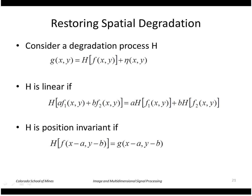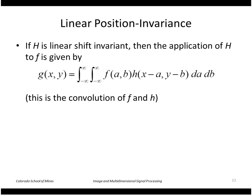We'll also look at position-invariant degradation: if we shift the image by a displacement A and B, that also shifts the result by that same amount. So the degradation acts the same way no matter where we are in the image — blurring in cameras is typically like that. This is then a convolution, expressed mathematically by taking our input image, multiplying by the degradation function H, and integrating over our neighborhood.